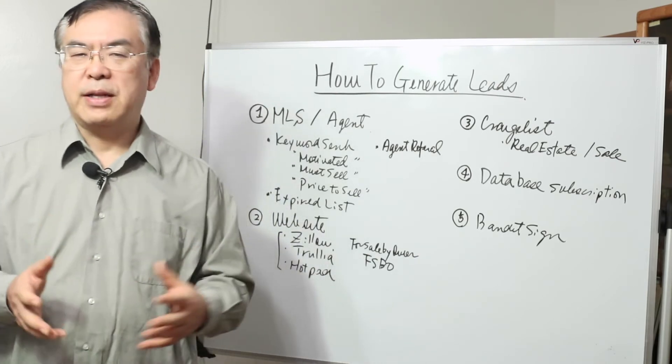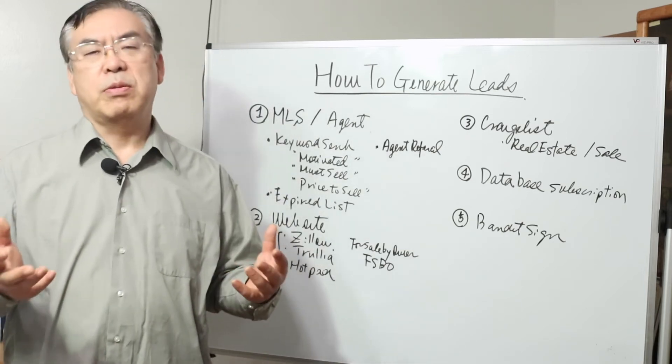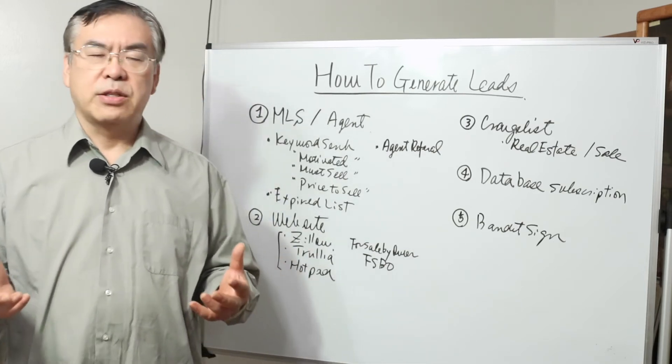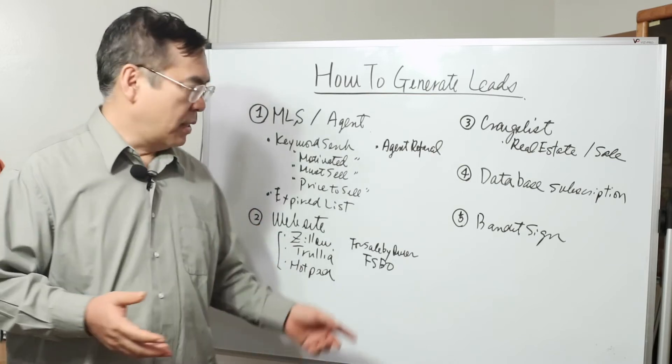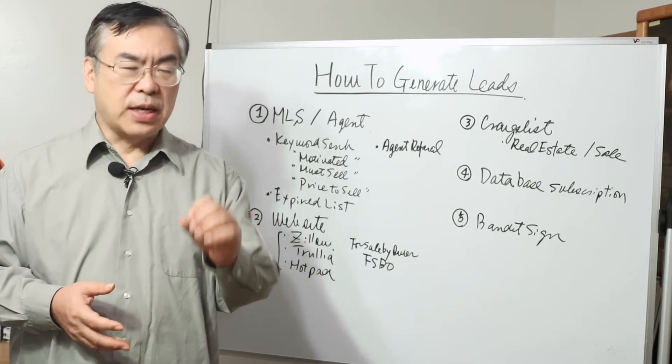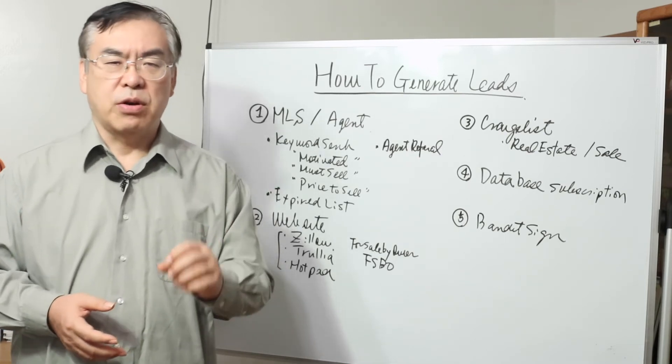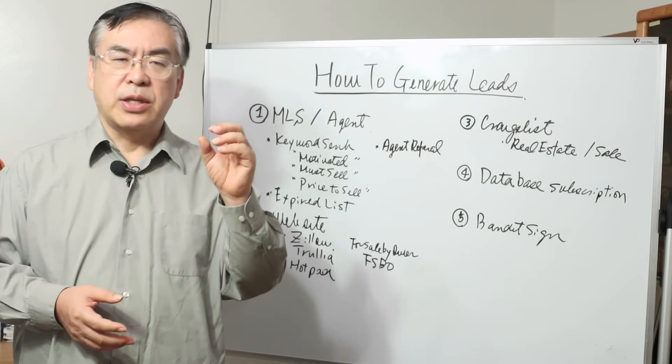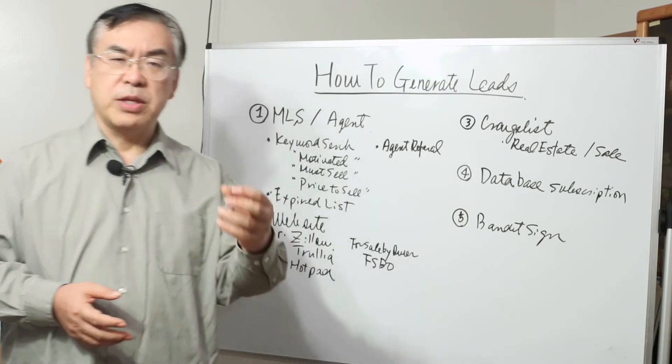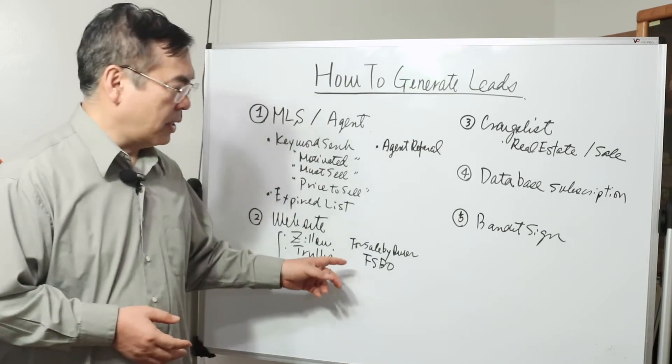Then you can find out contact info and you can directly contact with those owners to negotiate price or terms. This is another way to find leads. Another website, there are so many for sale by owner websites. FSBO.com. There are so many websites relating with the for sale by owners. Of course, most cases, those are not on the MLS. Therefore, you can find out contact info and then send the letters. Or if there's a telephone number, you can call them directly and then negotiate term or price. This is another way to find leads.